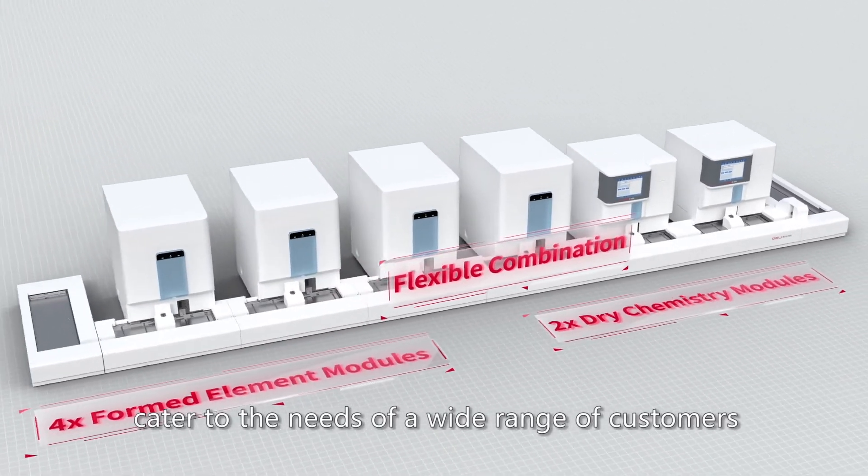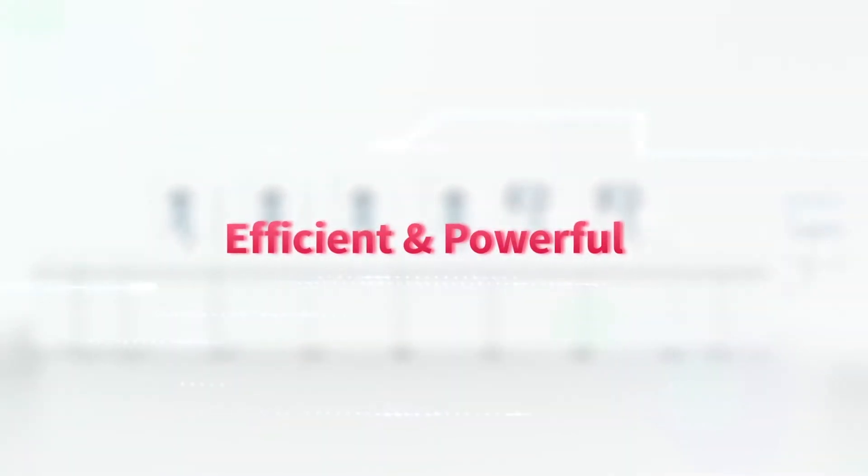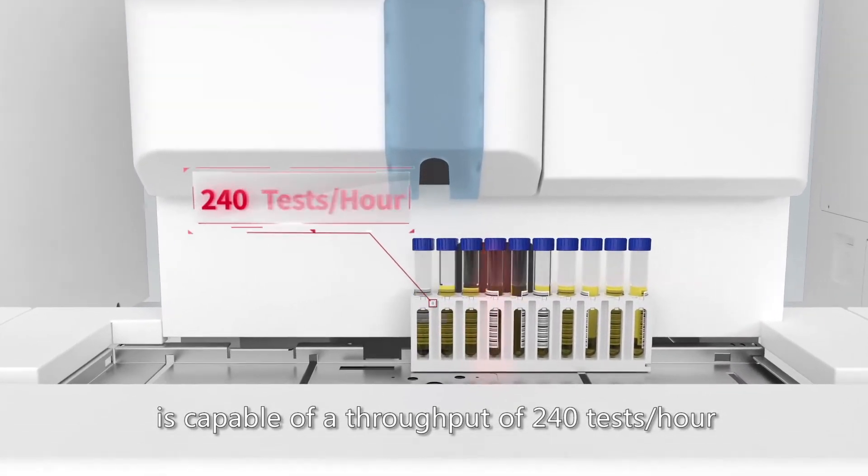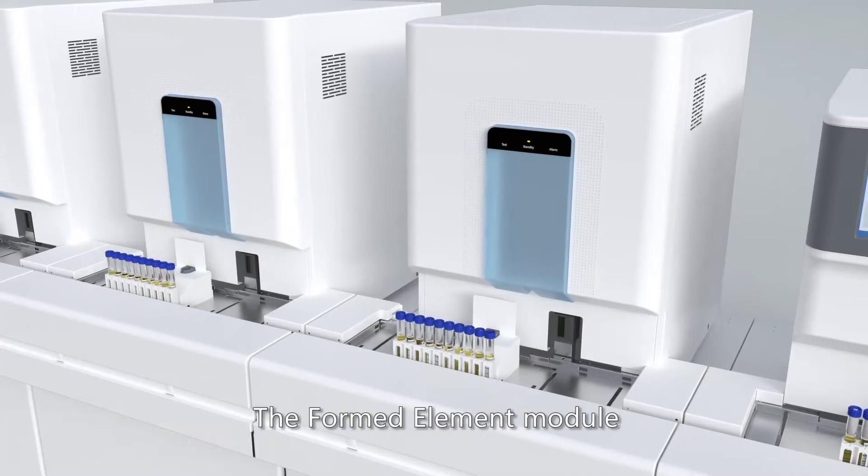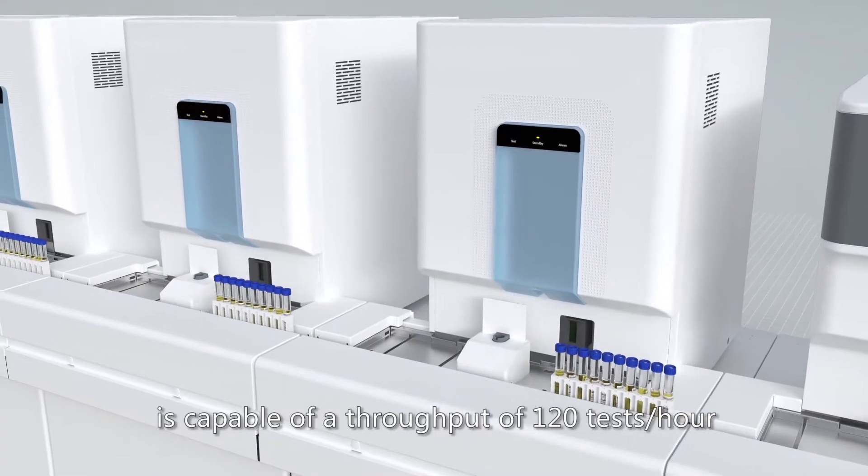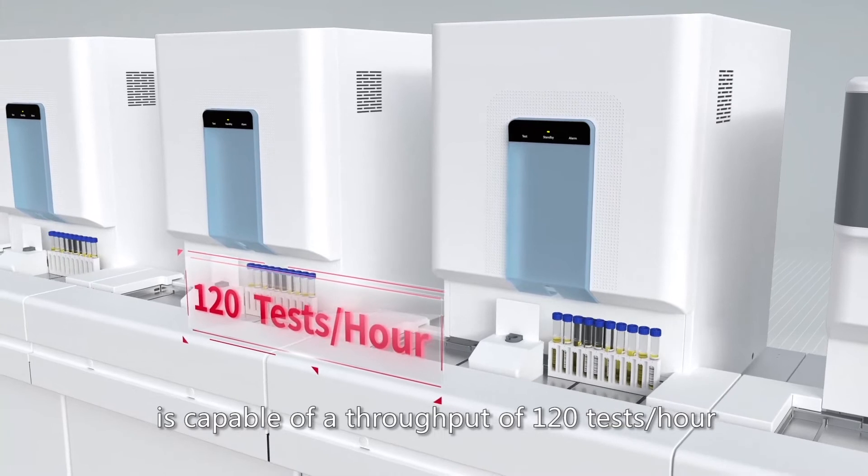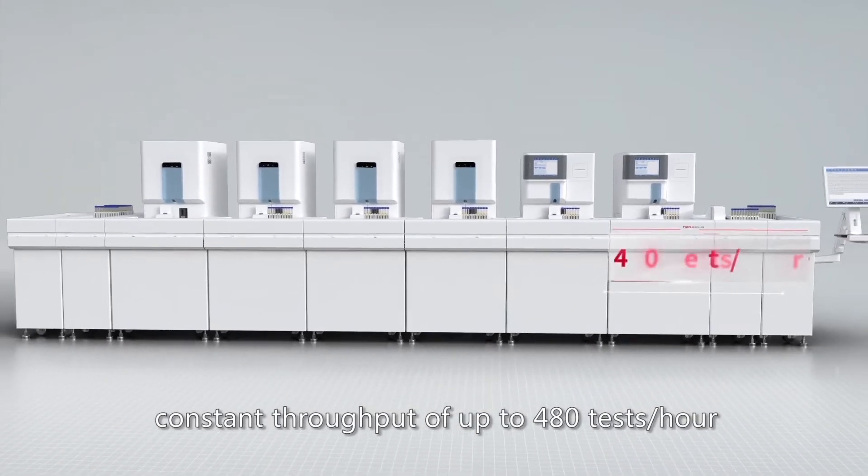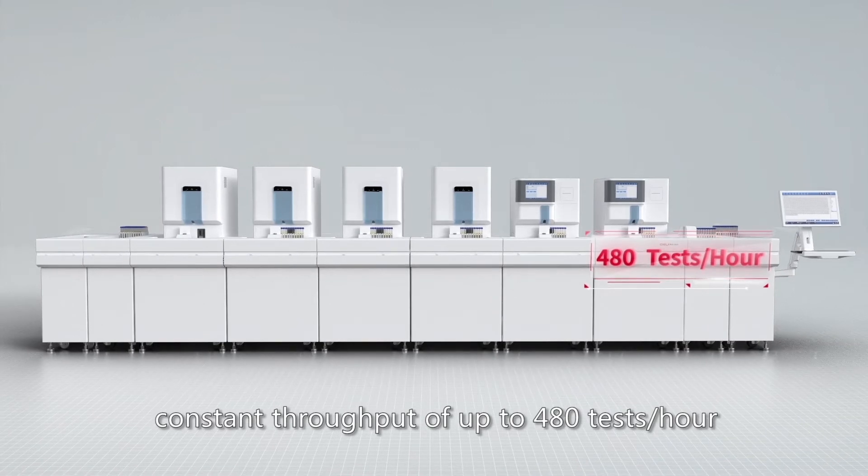The dry chemistry module is capable of a throughput of 240 tests per hour. The formed element module is capable of a throughput of 120 tests per hour. Combinations allow a maximum achievable constant throughput of up to 480 tests per hour.